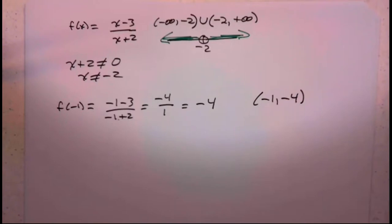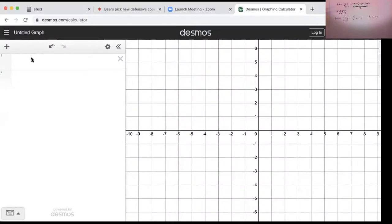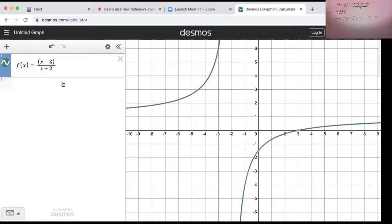Now, we should be able to see that on Desmos. So let's pull it up and see if we can identify that graph. So f of x equals x minus 3 over x plus 2. And we're saying the point negative 1, negative 4 should be on the graph. And it looks like I'm going to land right there at negative 1, negative 4. So sure enough, that is a point on the graph.